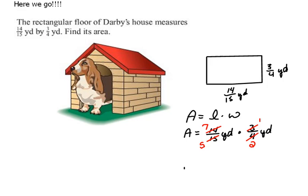Now I can multiply straight across: 7 times 1 is 7, and 5 times 2 is 10. Don't forget your units—yard times yard is yard squared, which we read as square yards.